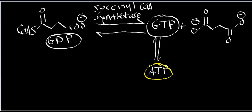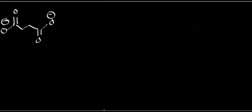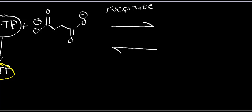So we end up generating succinate, and succinate is going to get consumed by another enzyme — succinate dehydrogenase. This is a dehydrogenase that does not use NAD. It's going to use a different cofactor: FAD. And what you get out of it is FADH2. Succinate dehydrogenase is a massive enzyme — it's not a soluble enzyme. All the other enzymes in the TCA cycle are soluble, but succinate dehydrogenase is in the inner membrane of the mitochondria.